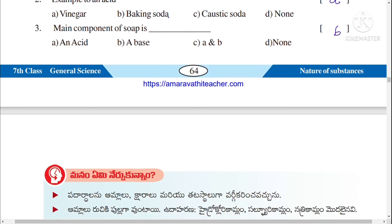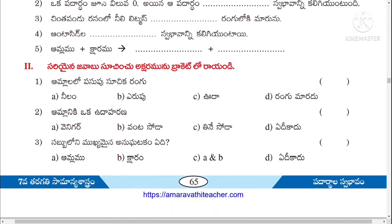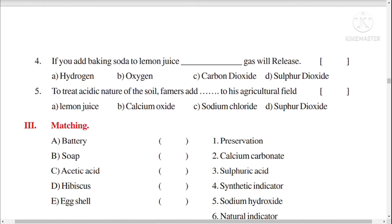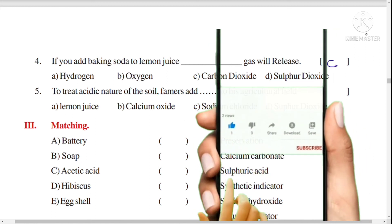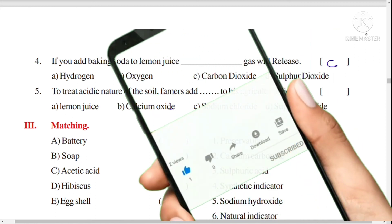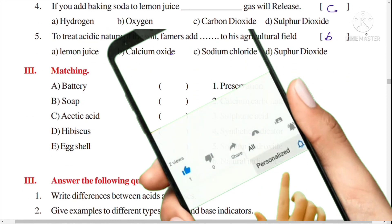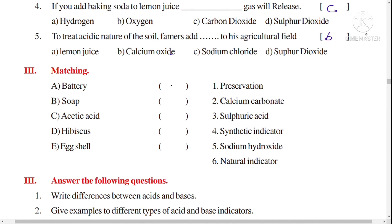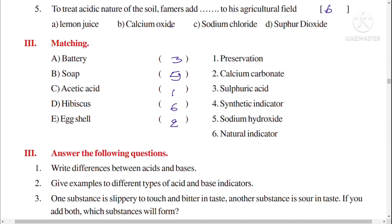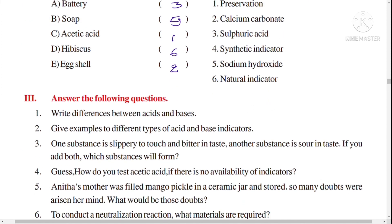Baking soda and caustic soda are bases. The main component of soap is a base. If you add baking soda to lemon juice, carbon dioxide gas is produced. To treat acidic soil, farmers use calcium oxide. Batteries contain sulfuric acid. Acid is used for preservation. Hibiscus is a natural indicator. Egg shell is made up of calcium carbonate. The question and answers will be discussed in the next video. Thank you for watching — please like, share, subscribe, and click the bell icon.